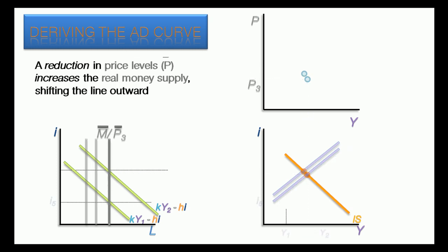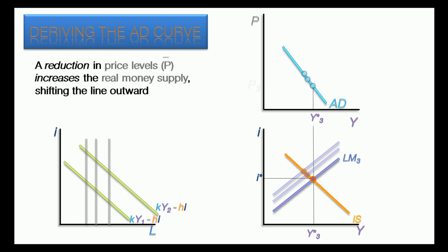This process could be repeated again to produce an even higher level of equilibrium income with lower prices. By connecting these points, the downward sloping demand curve is formed.